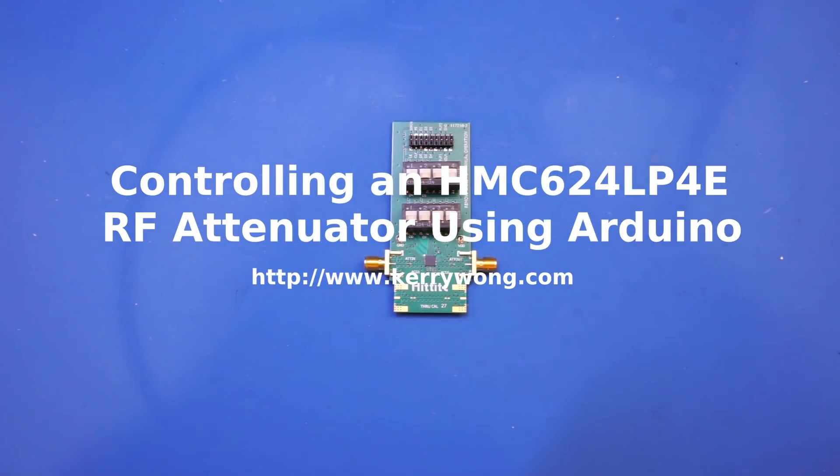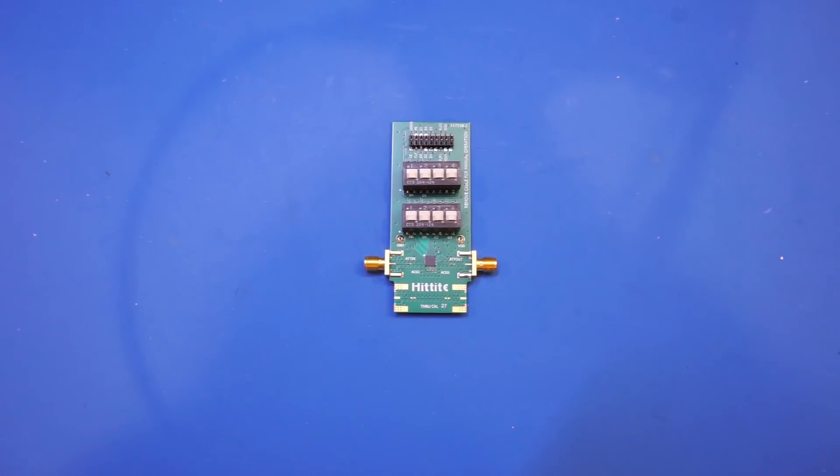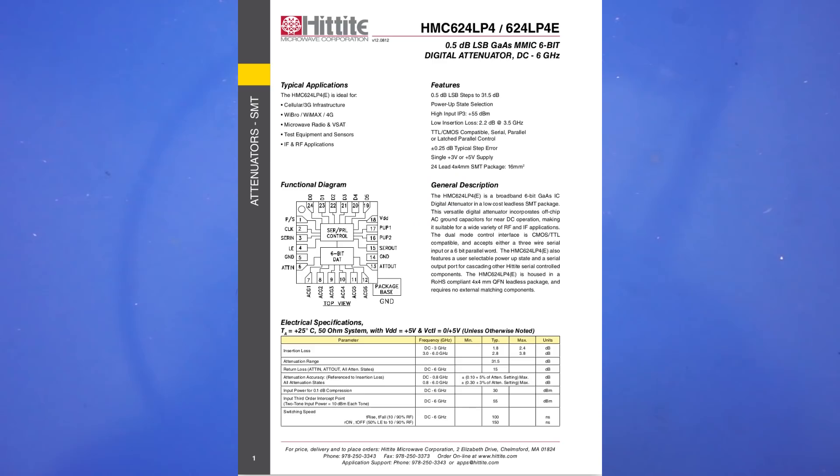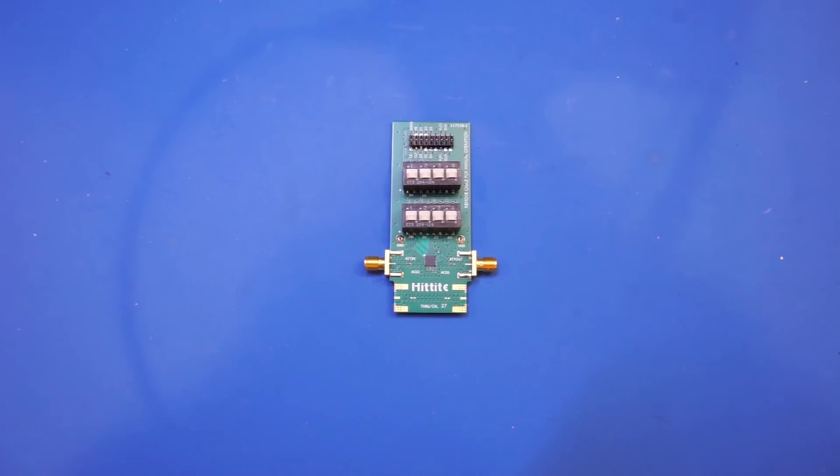Hi. In today's video, I wanted to take a look at this Hittite HMC624LP4E digital attenuator board, which has a bandwidth of between DC and 6 GHz. I can't remember exactly when I got this board, but it was probably 5 or 6 years ago, and I don't think I had ever powered it up or used it before.